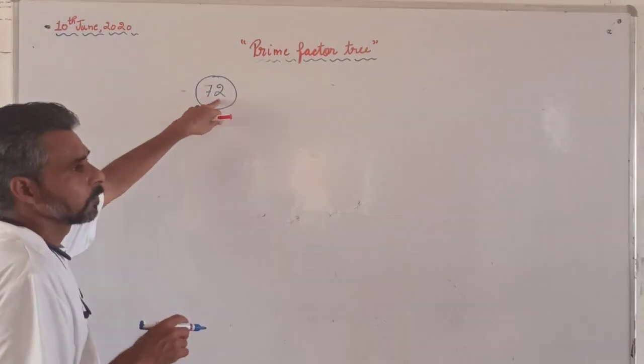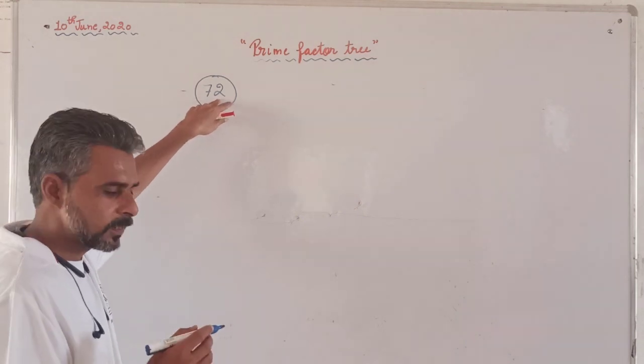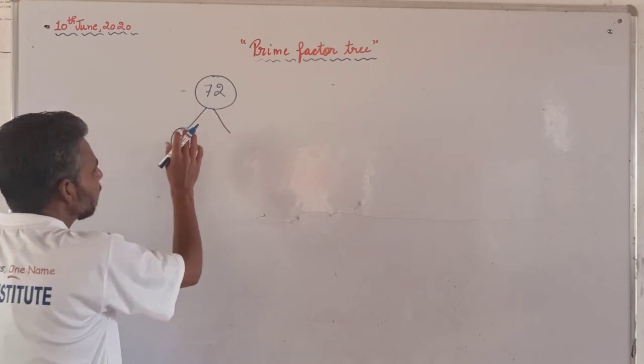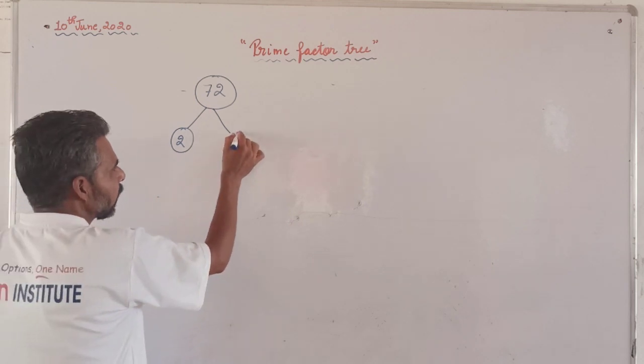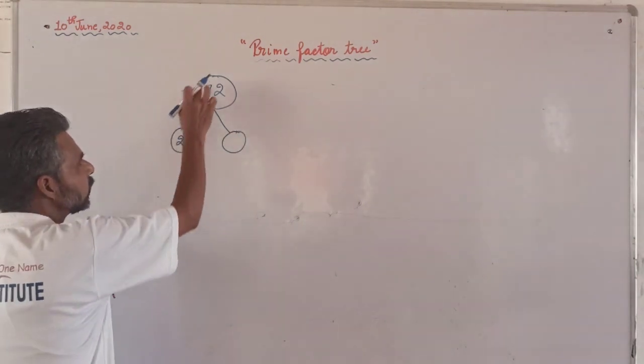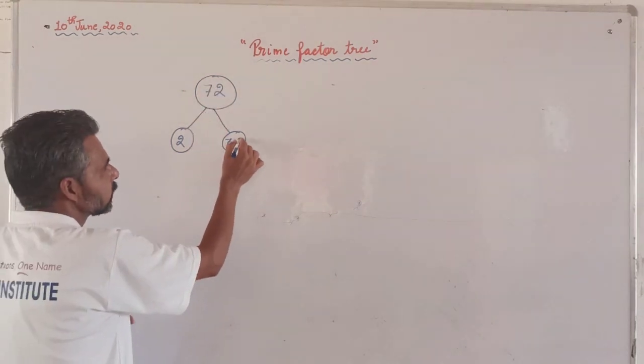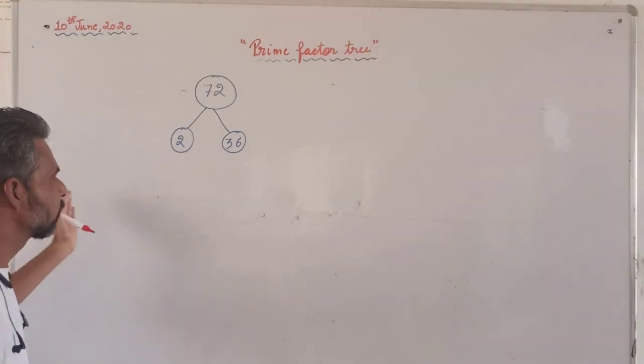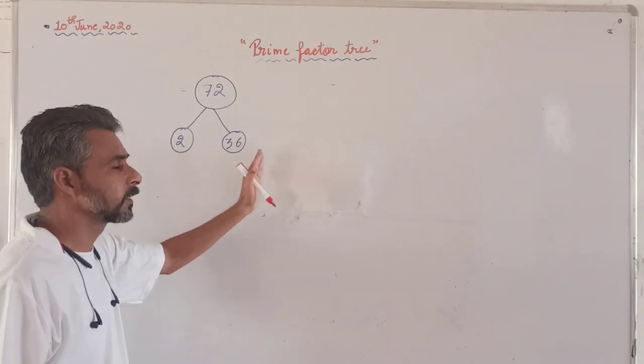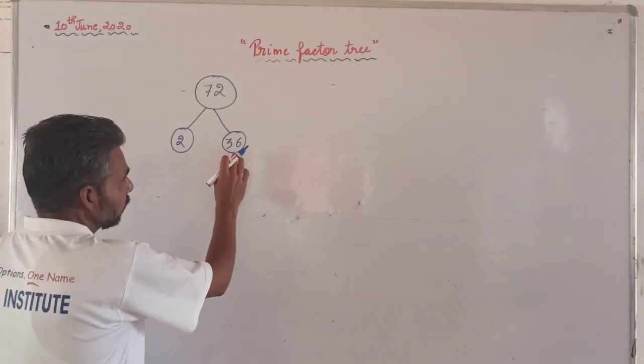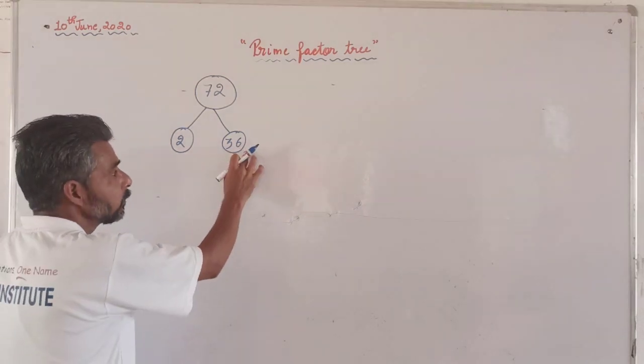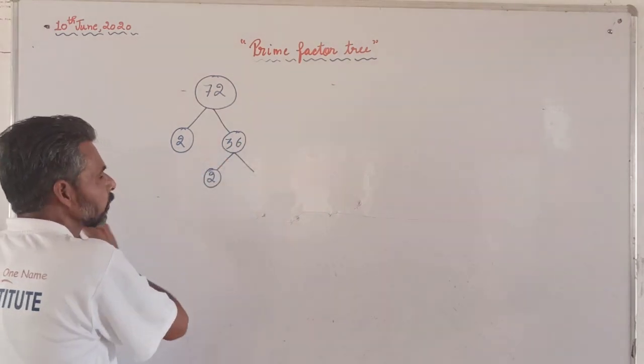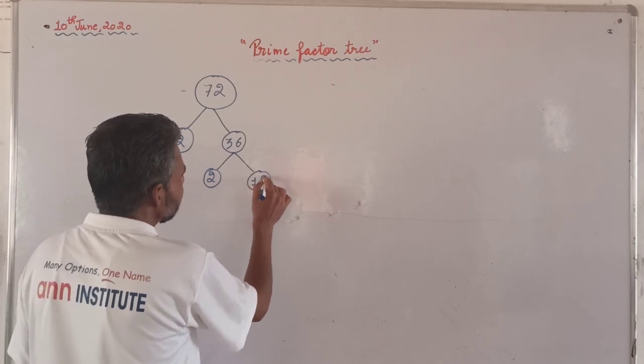Now here it is 2. The one's place is 2. Even number means it can be divisible by 2. So we will divide by 2, which gives us 36. Again 36 can be divided by 2, so we can divide by 2, giving us 18. Again, 18 can be divided by 2 to get 9.